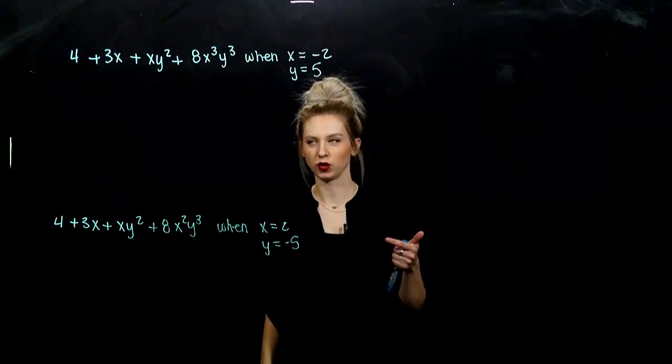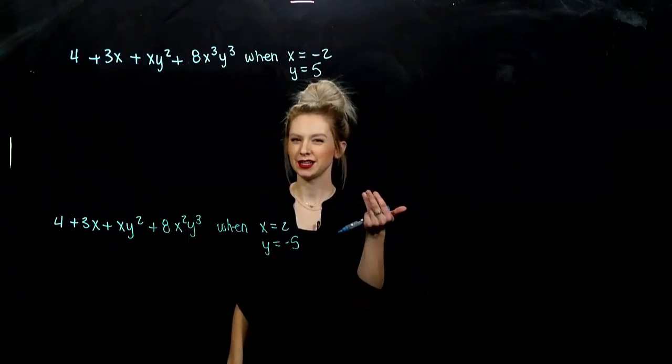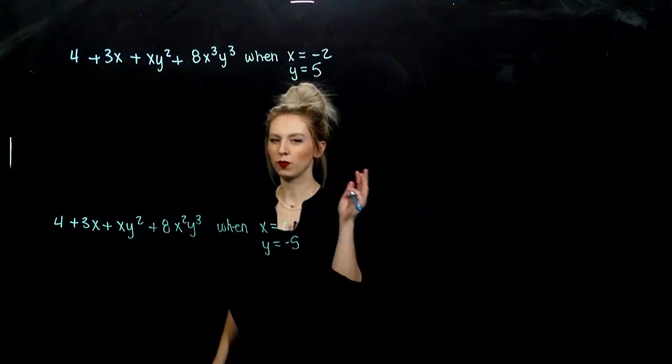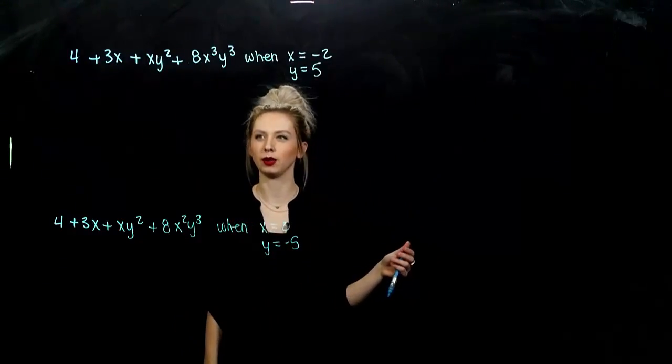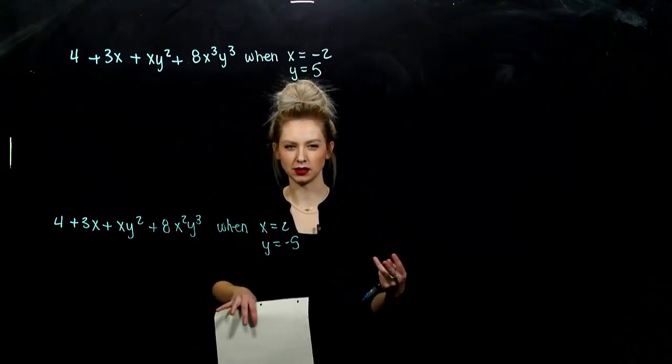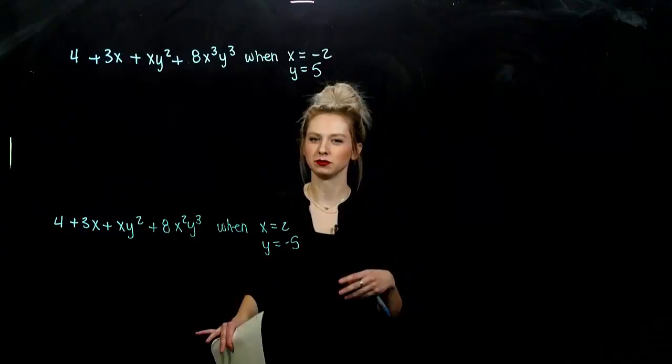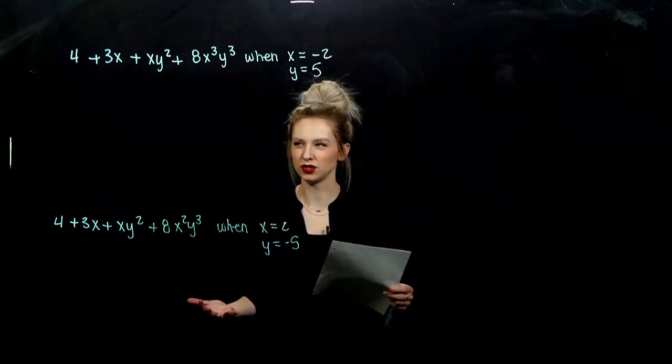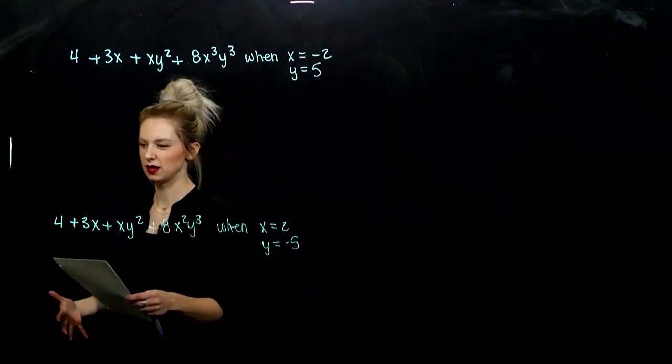We looked at addition and subtraction of polynomials, multiplication, and some of those special cases of multiplication. But before we look at division of polynomials, we want to look at this case where I might start mixing x's and y's together, more than one variable in a polynomial. So how do they behave? What do they do? How do we evaluate them?